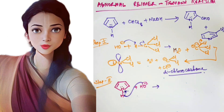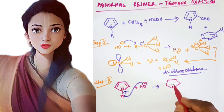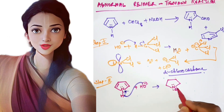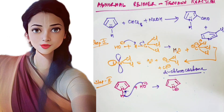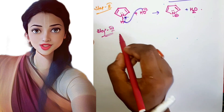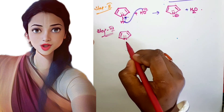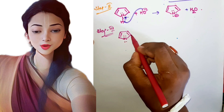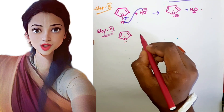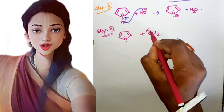Now, the OH⁻ ion first takes up the proton which is present on the nitrogen of pyrrole. After taking up that proton, there is a minus sign (negative charge) on the nitrogen atom. The molecule now has both a negative charge and a lone pair on the nitrogen atom.